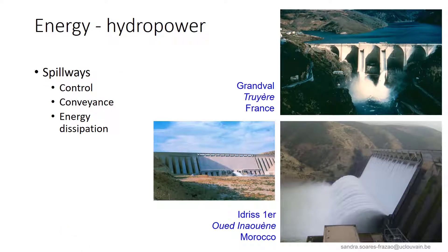We also have spillways — the devices that control, convey, and dissipate the energy from water released from the reservoir. In some circumstances, when a flood arrives, there is too much water, and to avoid overtopping of the dam — which could lead to dam failure — the spillways evacuate this excess water. These are very important structures that must be designed carefully and represent a significant cost in the overall design of a dam.